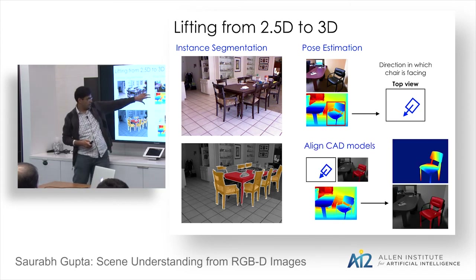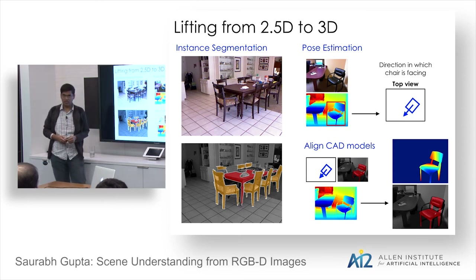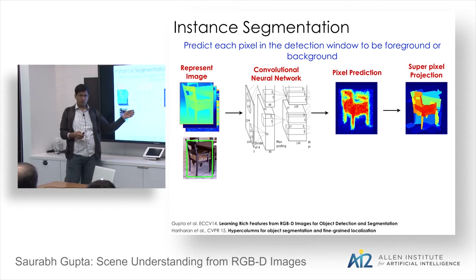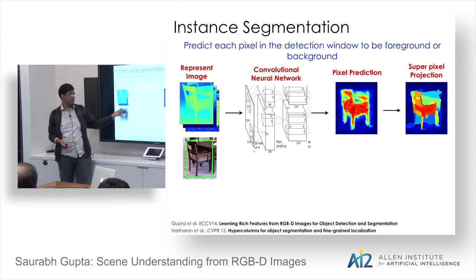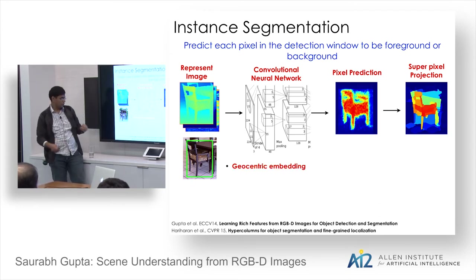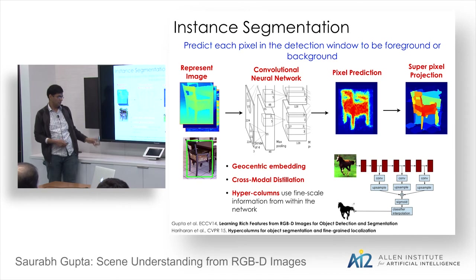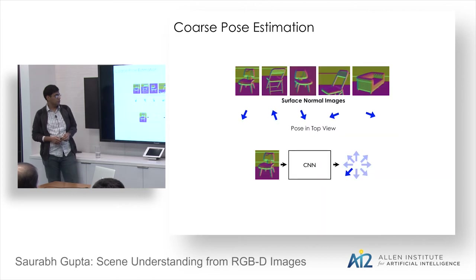Combining pose estimate, instance segmentation, and depth image, we fit models to the data and find this is robust enough for practical use. Instance segmentation is framed as pixel classification — a CNN predicts whether each pixel belongs to the object — using geocentric embedding, cross-modal distillation, and hypercolumns from intermediate network layers.